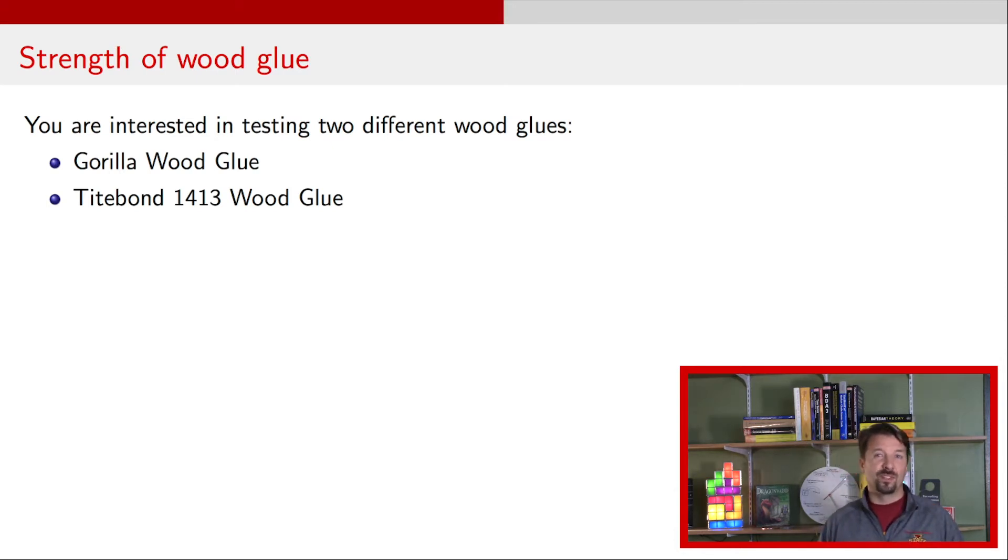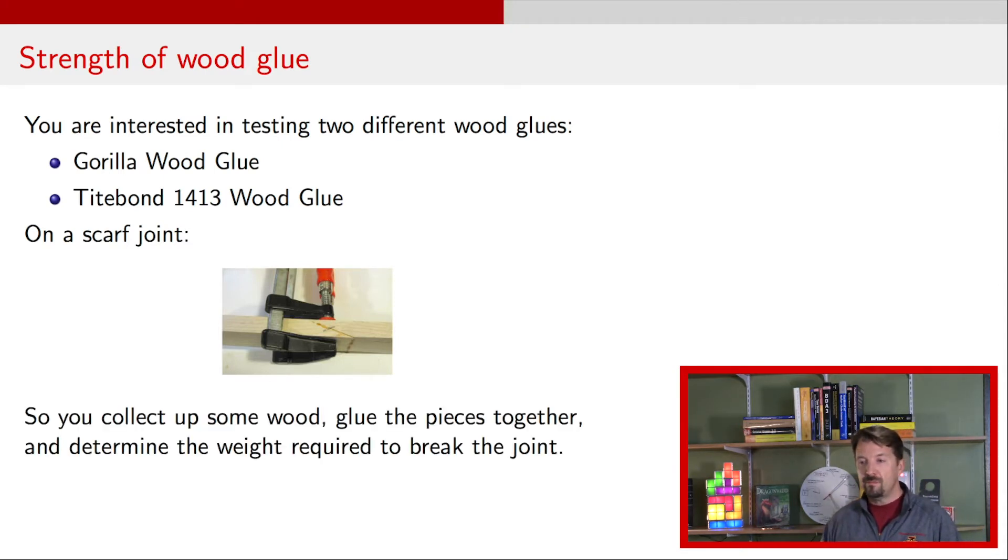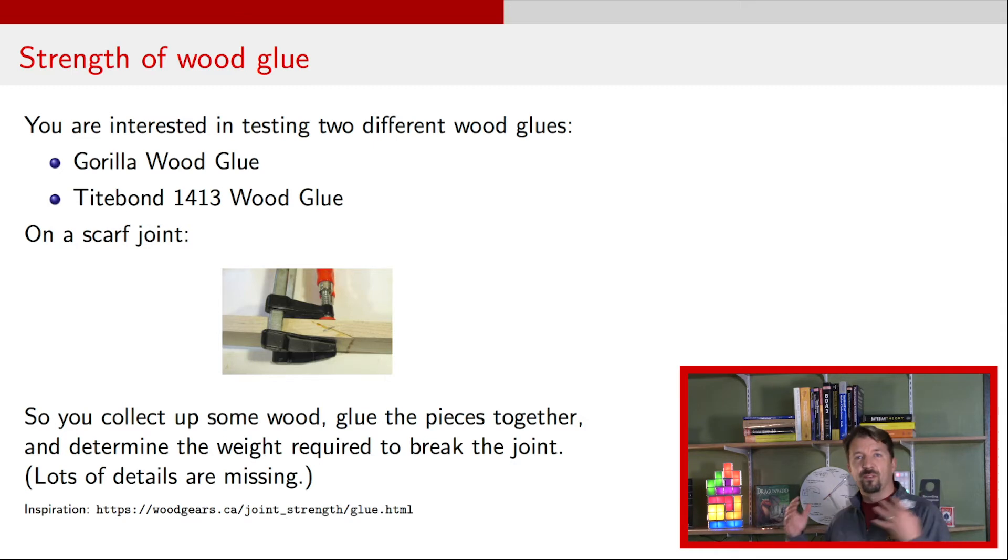I'm going to talk throughout this video and the next video about a particular experiment. There's gonna be a link at the bottom of this slide and I'll probably put in the description down below to an experiment that I thought was pretty unique. Somebody, a woodworker, decided to test different wood glues and so as a starting point we're just going to consider two different types of wood glues, Gorilla and Titebond. This individual went and made what are called apparently scarf joints. I'm not a woodworker so I don't know about this but it looks like it was just cut at say a 45 degree angle and then glued together and then they put some weight on the end of those pieces of lumber and they recorded how much weight is needed for that joint to break.